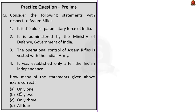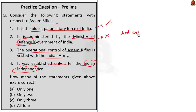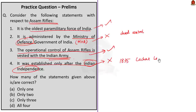Question number 4: Consider the following statements with respect to Assam Rifles. Statement 1: It is the oldest paramilitary force of India. Statement 2: It is administered by the Ministry of Defence under Government of India. Statement 3: The operational control of the Assam Rifles is vested with the Indian Army. Statement 4: It was established only after Indian independence. Statement 1 is correct. Statement 2 is incorrect — the Assam Rifles is the only paramilitary force in India with a dual control structure: the administrative control is with the Ministry of Home Affairs, while the operational control is with the Indian Army under the Ministry of Defence. So Statement 3 is correct. Statement 4 is incorrect — the Assam Rifles was established in 1835 as a militia called Cachar Levy. Only Statements 1 and 3 are correct. The correct answer is option B, only 2.